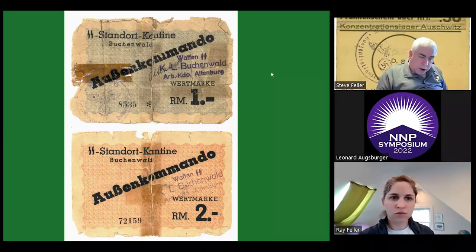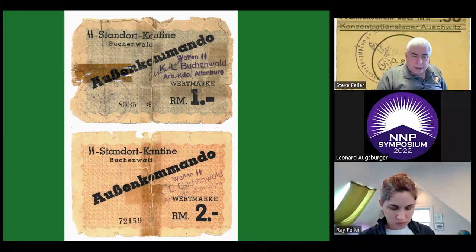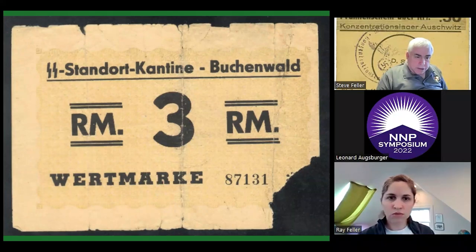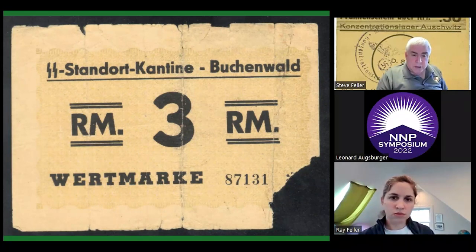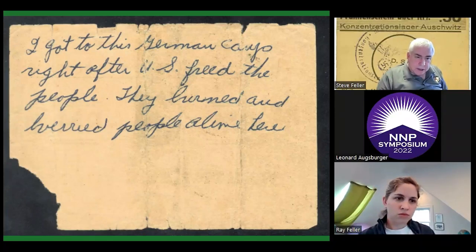Sometimes people say they never knew about the camps, that they were invisible. Well, camps were not in downtown Munich, but in suburbs like Dachau — with hundreds, thousands of camps, I have serious doubts about whether people didn't know. This is a three-mark note from Buchenwald in terrible condition. Some come in uncirculated condition. But this one I got because of what was written on the back: 'I got to this German camp right after the U.S. freed the people. They burned and buried people alive here.' That makes it an important note.